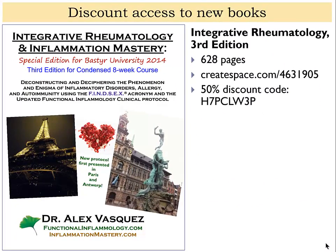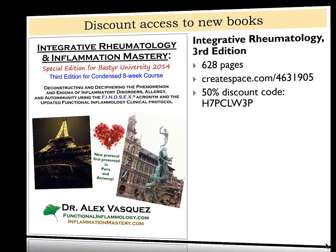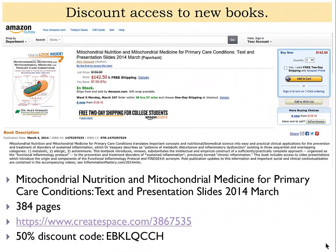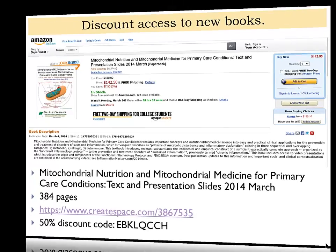For more information, you can access my most recent textbook, which is Integrative Rheumatology and Inflammation Mastery — this is the third edition, published in January of 2014. This is available on Amazon.com for the retail price of $150, or you can use Amazon's distributor, CreateSpace, and use this discount code for 50% off of retail price. Likewise, with the Mitochondrial Nutrition and Mitochondrial Medicine book, you can access it on Amazon.com, or you can use the discount code provided here.